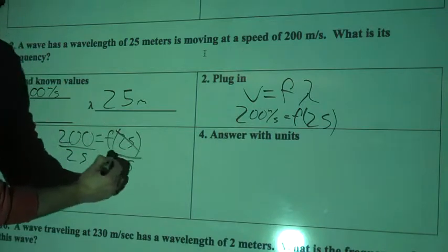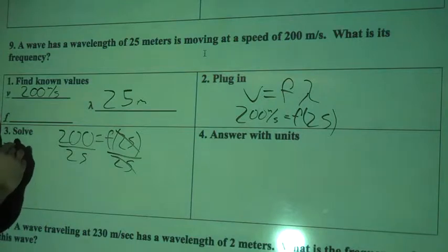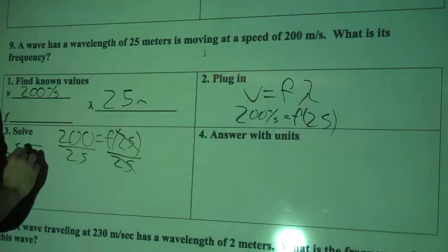OK, these two cancel. And now I've got 200 divided by 25, so I'm going to do that over here. 25 goes into 200.